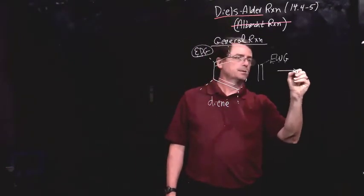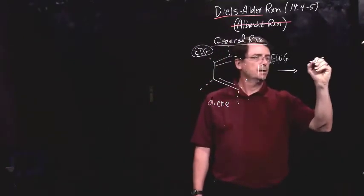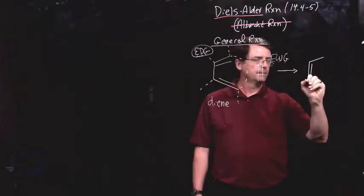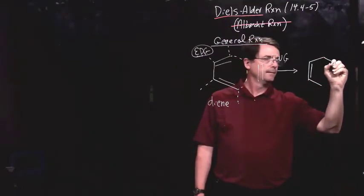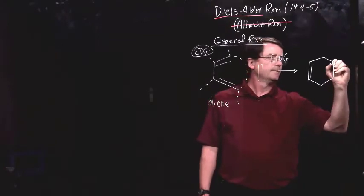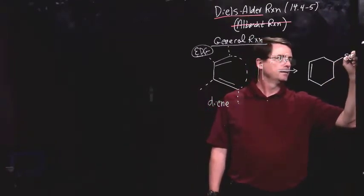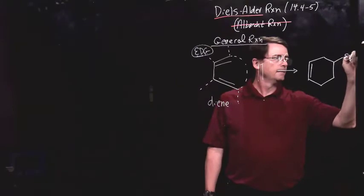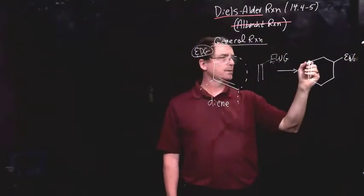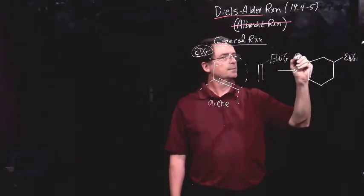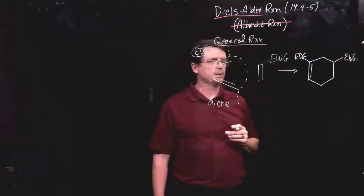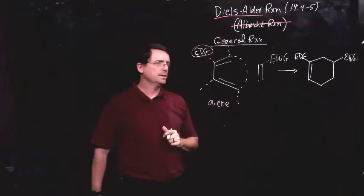Now, this reaction produces a six-membered ring with the electron-withdrawing group. And if I had an electron-donating group on there, it would go like this. Now, how does that occur?